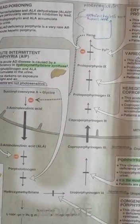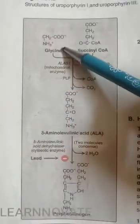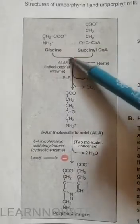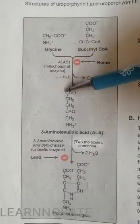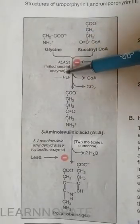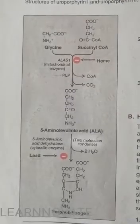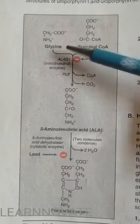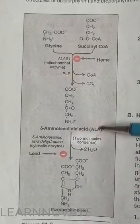Starting from the first step, which involves certain amino acids: glycine, an essential amino acid present in our body, combines with succinyl-CoA, a part of the Krebs cycle. In the presence of ALAS1 (aminolevulinic acid synthase 1), a mitochondrial enzyme, and PLP (pyridoxal phosphate, vitamin B6) acting as a coenzyme, there is a release of carbon dioxide and CoA. Glycine combined with succinyl-CoA forms alpha-aminolevulinic acid, also called ALA.